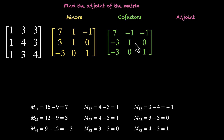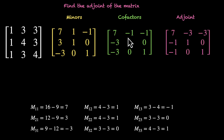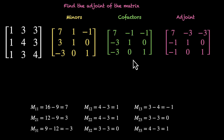Now we just have to take the transpose and we'll get our adjoint. The first row 7, minus 1, minus 1 becomes the first column. Then minus 3, 1, 0 becomes the second column. And minus 3, 0, 1 becomes the third column. So that's how we find the adjoint of a matrix.